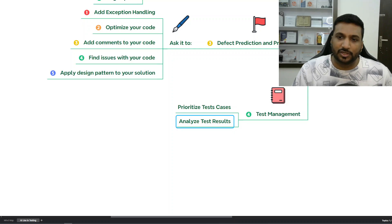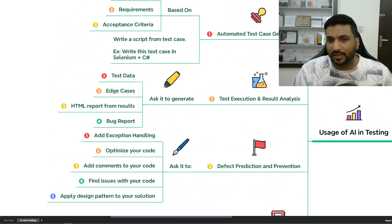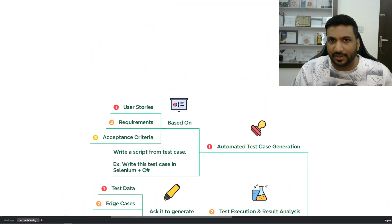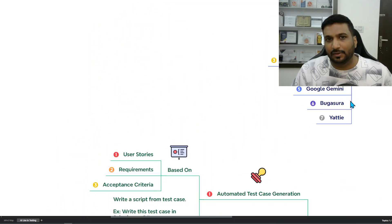The fourth use case is test management — for example, prioritizing test cases or analyzing test results. These are the key potential areas where AI is being used in testing.